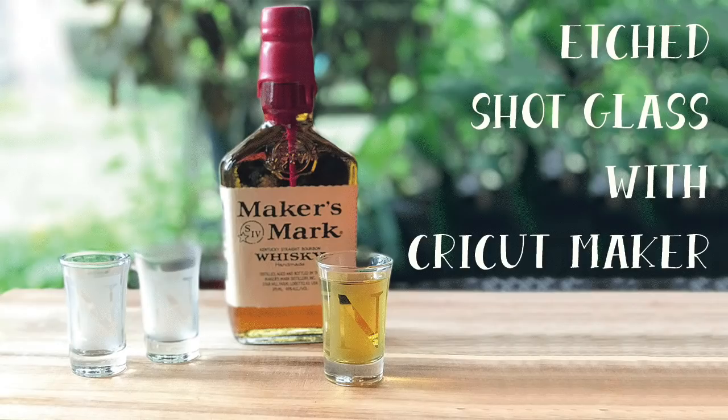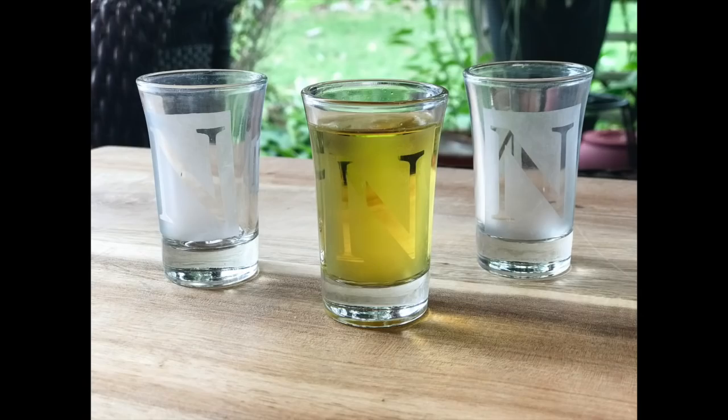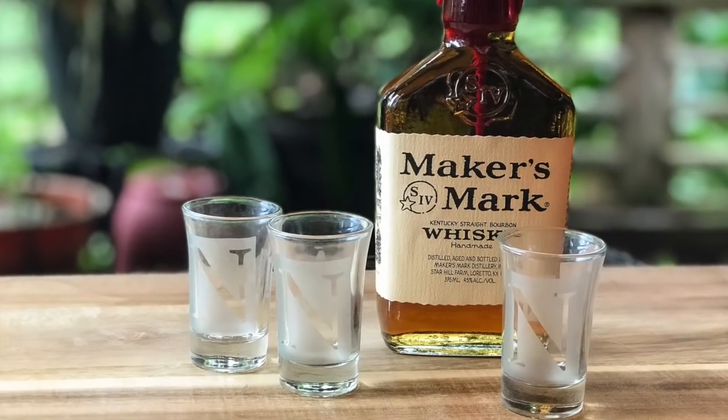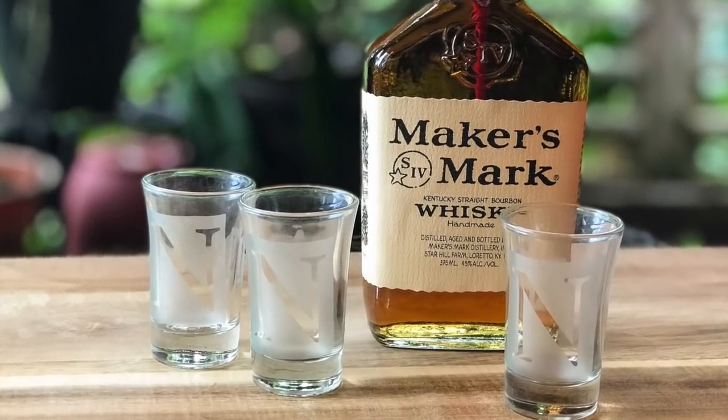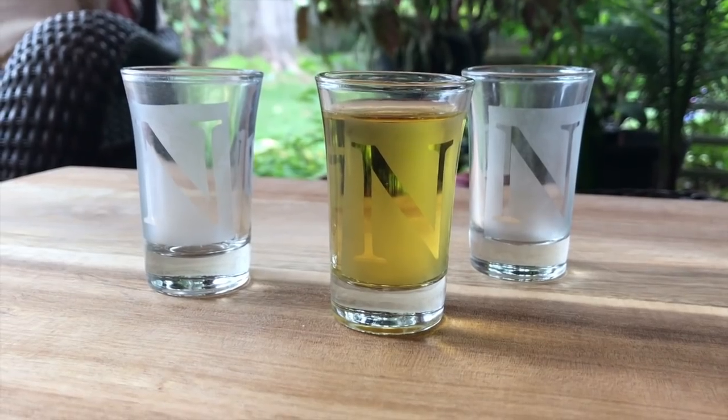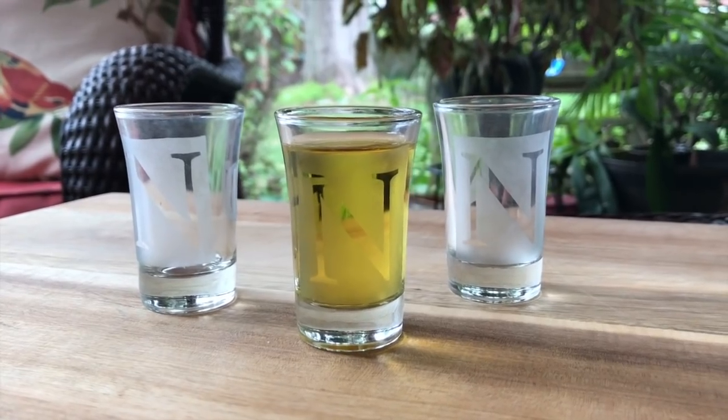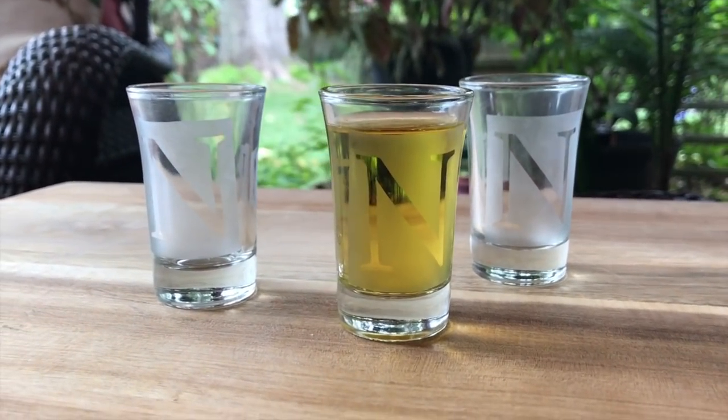Hi everyone, thanks for joining me for another Cricut tutorial. Today we're going to use our Cricuts to cut some vinyl to create a stencil and use that to etch some shot glasses. With the holidays right around the corner, I thought this was a great idea for stocking stuffers, bachelor parties, newlywed couples, engagement gifts, hostess gifts, all kinds of things. It's a really simple and relatively inexpensive gift to make. So let's get started.